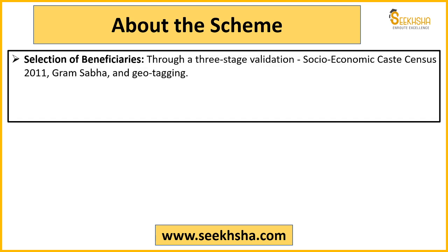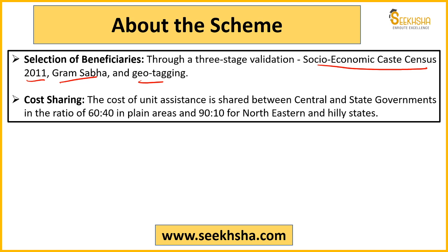How will the selection of beneficiaries be done? A 3-stage validation process has been set up. First, beneficiaries will be chosen on the basis of the Socio-Economic Caste Census (SECC) 2011. Finally, asset creation geotagging is done so that corruption can be minimized - otherwise houses would be built only on paper and the money would go into corruption.